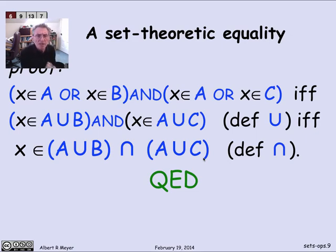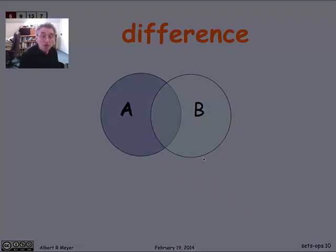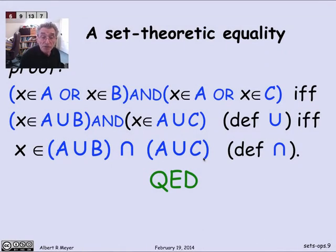So this is a general method, actually, where you can take any set theoretic equality involving union and intersection and the operations of difference and complement that we'll talk about in a moment. And we can convert any such set theoretic equality into a propositional equality or propositional equivalence.